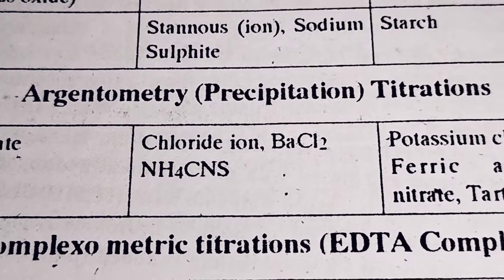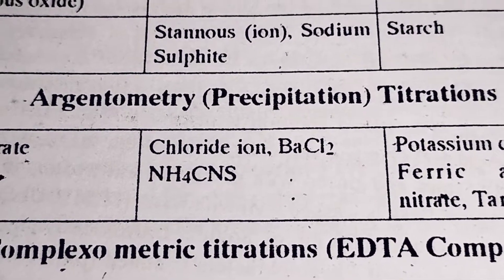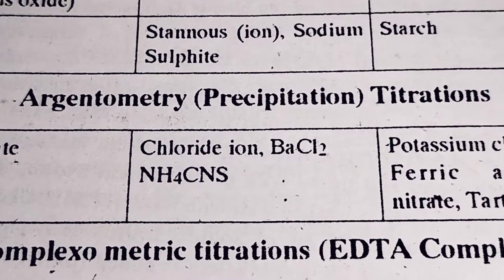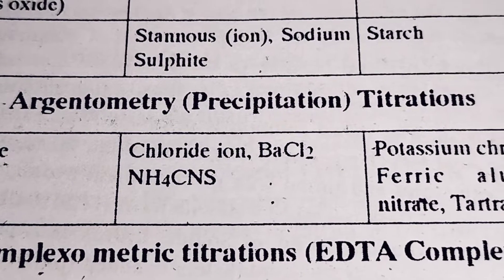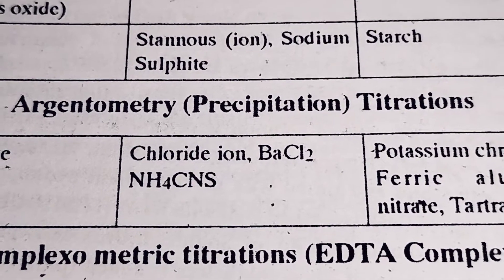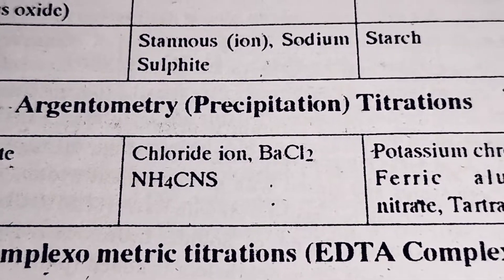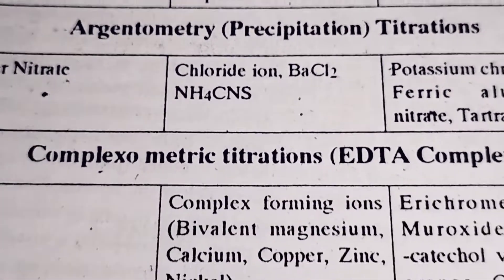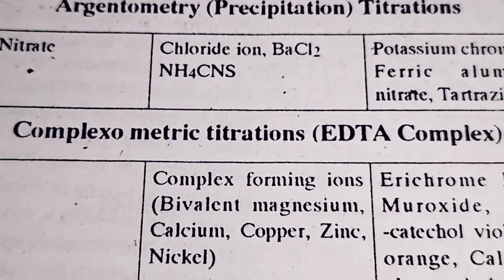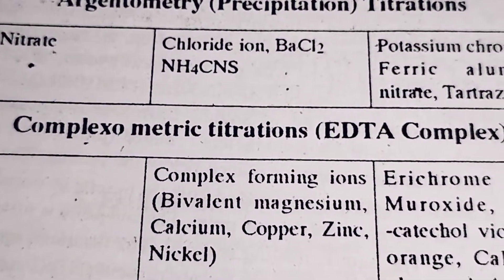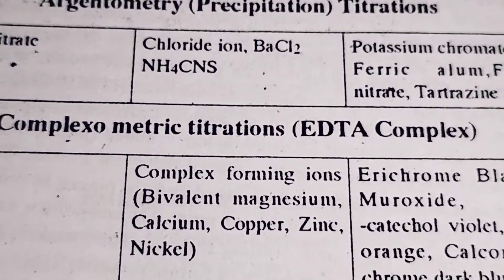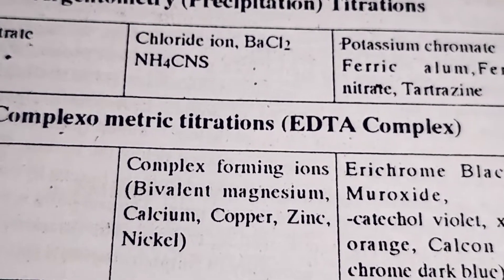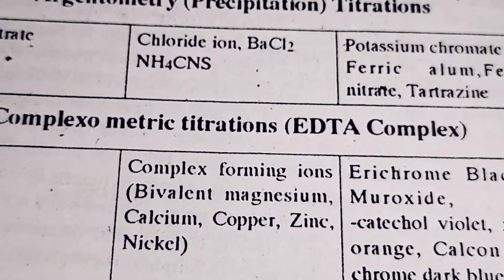Further types include argentometric, acidimetric, and precipitation titration. We also have complexometric titration. These are all types of titration.